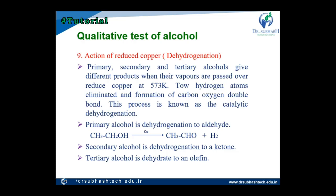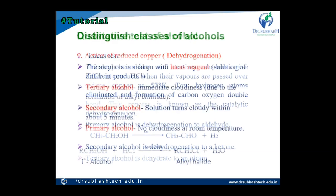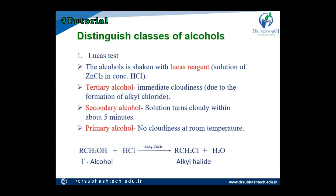In catalytic dehydrogenation, primary alcohol gives an aldehyde with copper as catalytic agent. Secondary alcohol gives a ketone by dehydrogenation, and tertiary alcohol also forms a ketone. This test helps distinguish the class of alcohol.